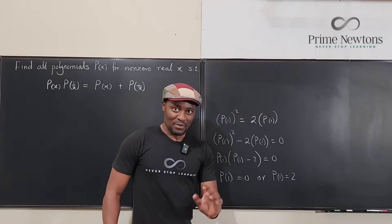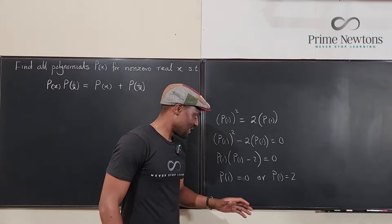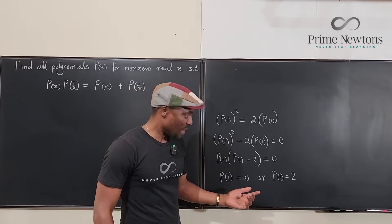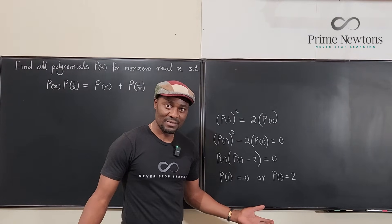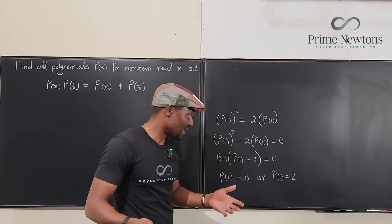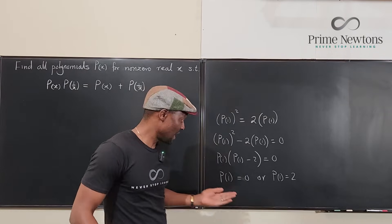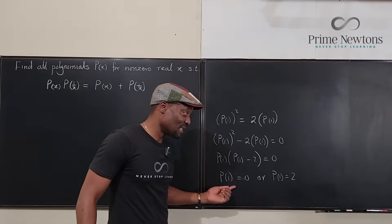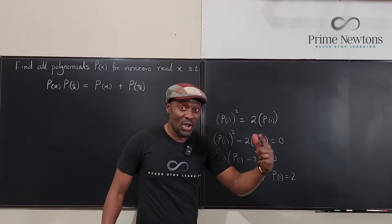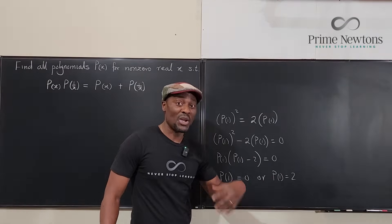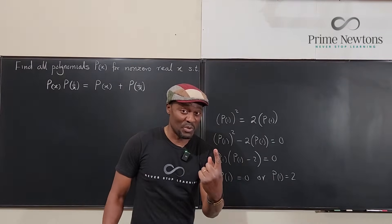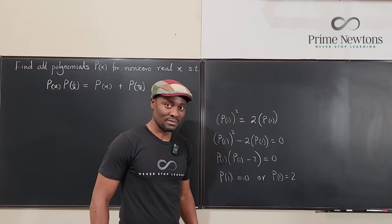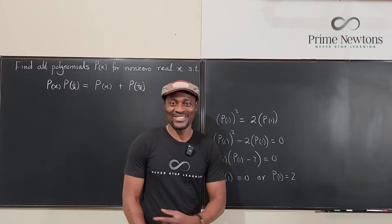So the first impression is that the polynomial I'm looking for might come in two forms — these are the only two ways P(1) can behave. It's either going to give me 0 or give me 2. I'm anticipating not a single polynomial but potentially multiple polynomials. Let's get into the video.